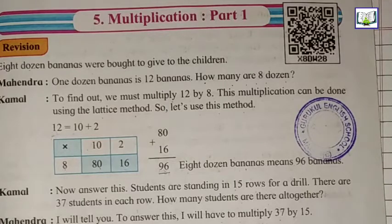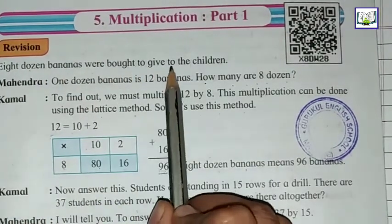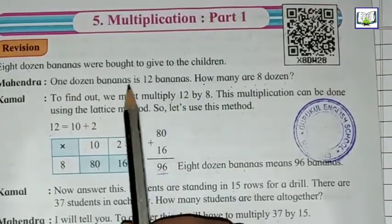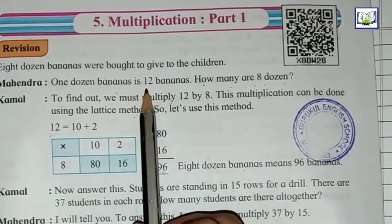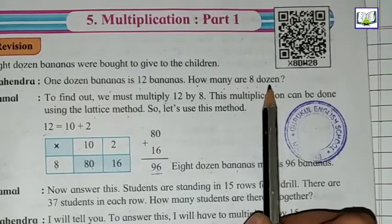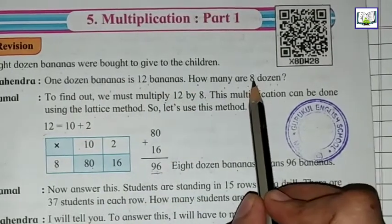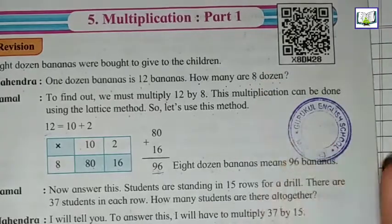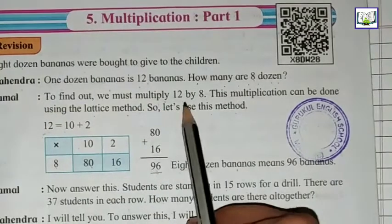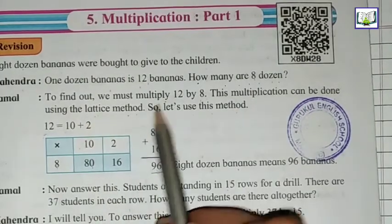Let's start with the revision. Eight dozen bananas were bought to give to the children. Mahindra said one dozen is twelve bananas. How many are eight dozen? To find out, we must multiply twelve by eight. This multiplication can be done using the lattice method. Let's use this method.